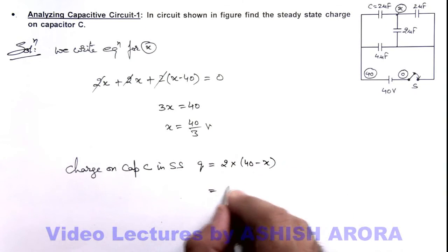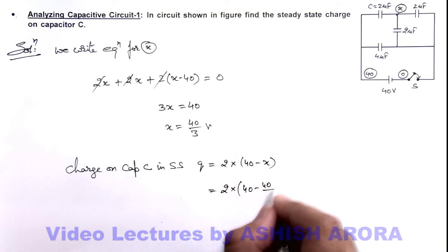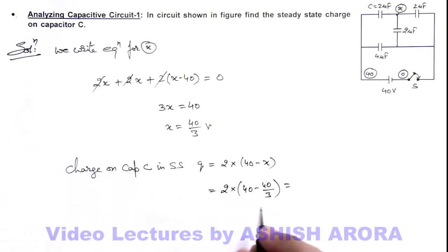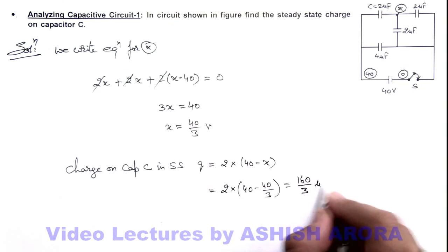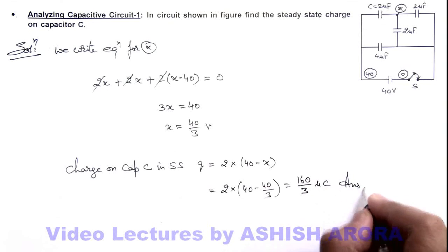On substituting the value it is 2 multiplied by 40 minus 40 by 3. So here this will give us the result to be 160 by 3 micro coulomb. That will be the answer to this problem.